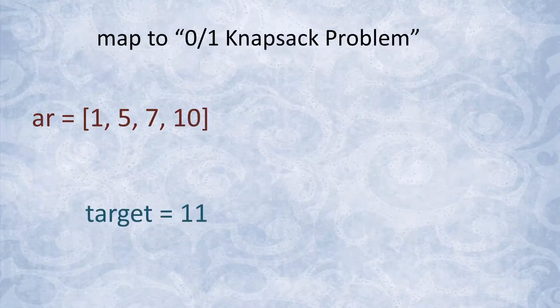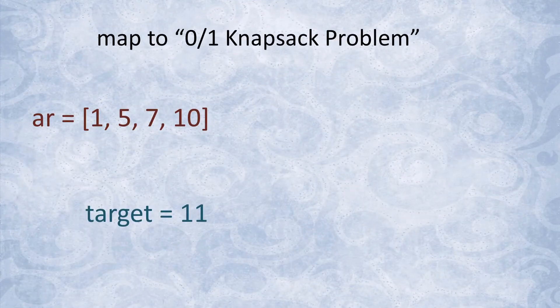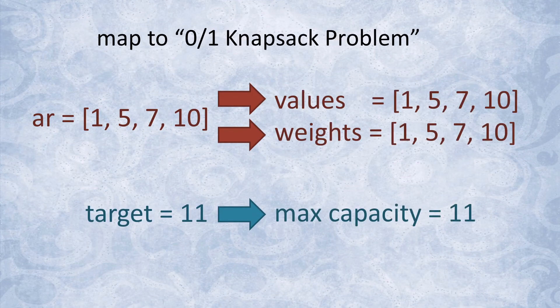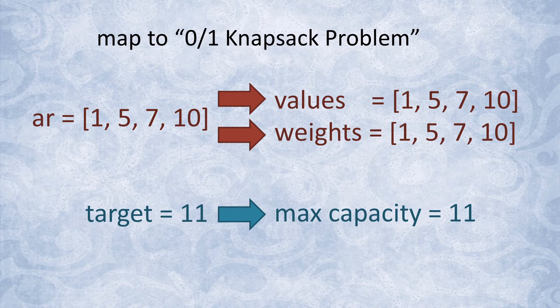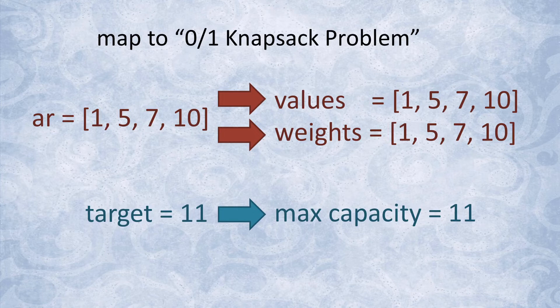We can set both the value and the weight of each item to the values from our input array. The max capacity would just be our target and now we can call 0/1 knapsack and it'll give us back an array of zeros and ones indicating which value is going to the first set and which going to the second set.